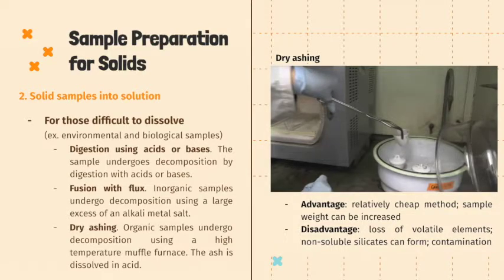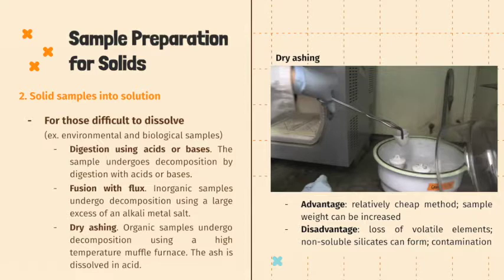Organic-containing samples can also be decomposed by dry ashing. The sample is placed in a suitable crucible and heated to 500–600 degrees Celsius in a furnace for 4–6 hours. Volatile components are vaporized and organic components form gases such as carbon dioxide, which can be weighed and analyzed. After heating, the residual ash left in the crucible can be dissolved in acid for analysis. An advantage is that it is a relatively cheap method and sample weight can be increased. Disadvantages include loss of volatile elements, formation of non-soluble silicates, and a higher risk of contamination.